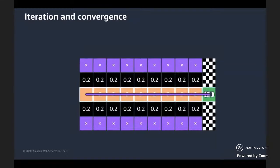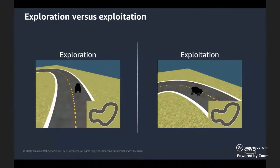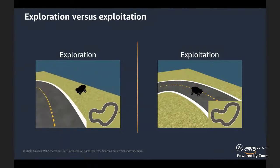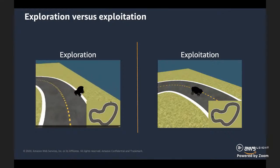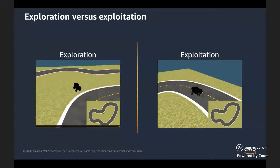Convergence happens when a model starts repeating the same specific actions depending on the state it is in. As the model continues training, the actions from each state don't change anymore — the model is optimizing for expected cumulative return, and performance will be the same repeatedly with subsequent updates not really changing behavior. A straight line to the finish line is exactly a sign of convergence. There is a trade-off between exploration and exploitation, which you determine as a hyperparameter. If you explore too much, your model may take a very long time to converge. If you exploit too soon, your model may not find the best driving behavior.